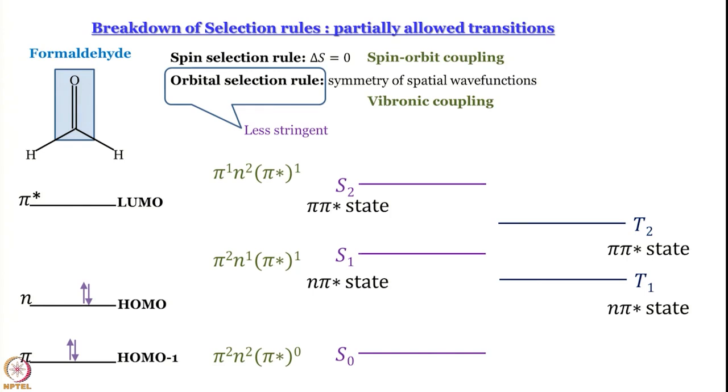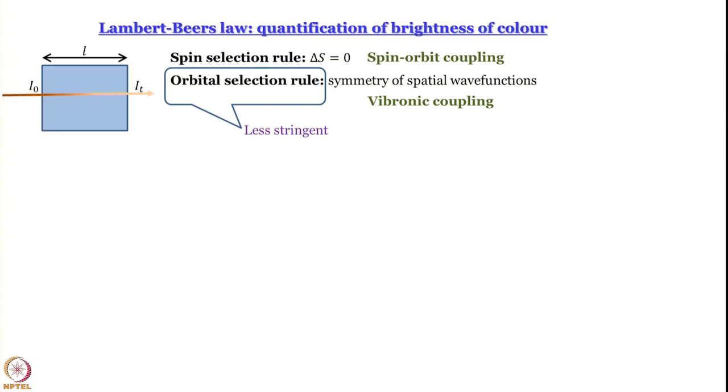The S0→S1 transition is forbidden by orbital selection rule, but it does take place to some extent because selection rules can break down, giving partially allowed transitions. The spin selection rule can break down by spin-orbit coupling — spin angular momentum and orbital angular momentum couple, causing what was a pure singlet state to mix with triplet character. The orbital selection rule can break down by vibronic coupling — coupling between vibrational and electronic wave functions. When a vibration distorts the molecule, symmetry breaking allows orbitally forbidden transitions to become vibronically allowed. These topics will continue in the next module, along with Lambert-Beer's law and what absorption spectra actually look like.